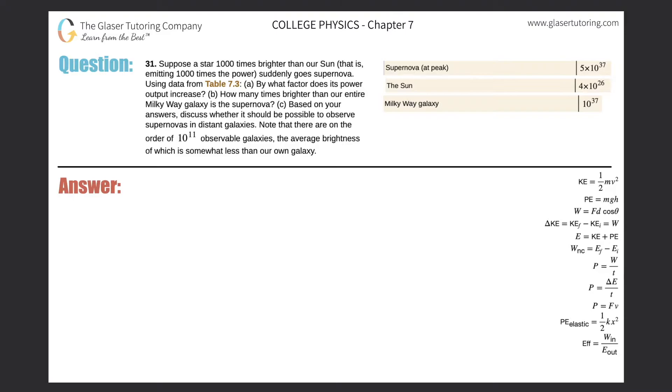Number 31. Suppose a star 1,000 times brighter than our sun, that is emitting 1,000 times the power, suddenly goes supernova. Using data from table 7.3, letter A, by what factor does the power output increase?